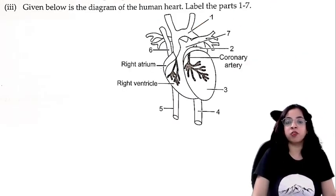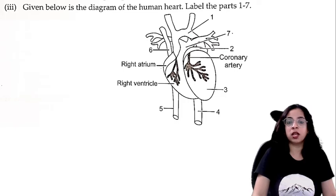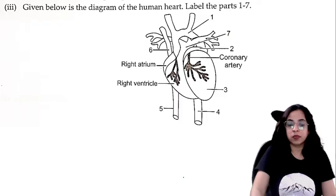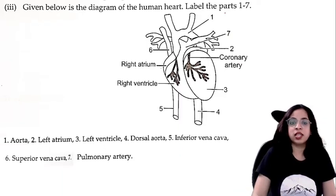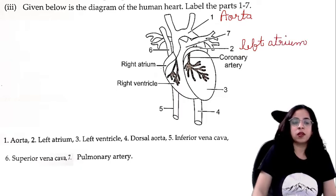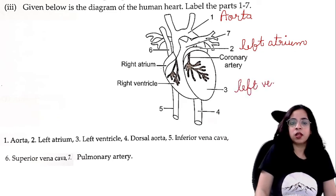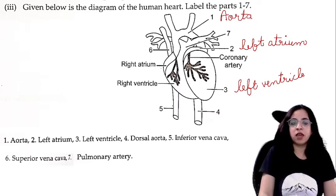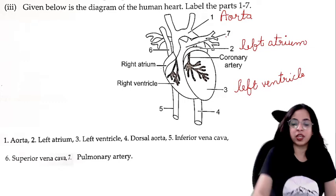A diagram of the human heart is given; label parts 1 through 7. Looking at the diagram: 1 is aorta, 2 is left atrium, 3 is left ventricle, 4 is dorsal aorta, 5 is inferior vena cava, 6 is superior vena cava, and 7 is pulmonary artery.